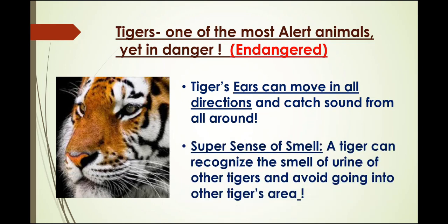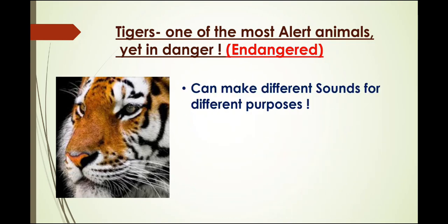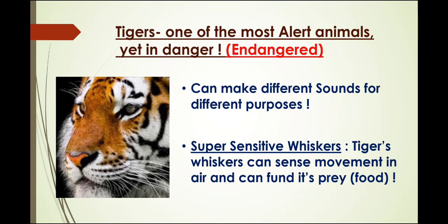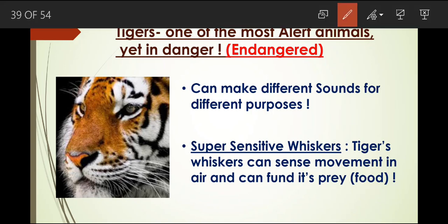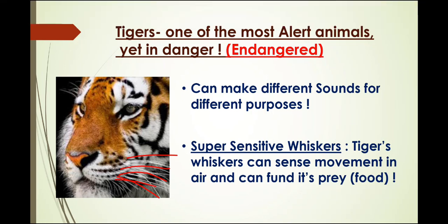Tigers have a super sense of smell. A tiger can recognize the smell of urine of other tigers and avoid going into another tiger's area. Tigers can also make different sounds for different purposes — like to scare someone or to call out to their friends. They also have super sensitive whiskers. Whiskers are these things you can see here. A tiger's whiskers can sense movement in the air and help it find its prey.